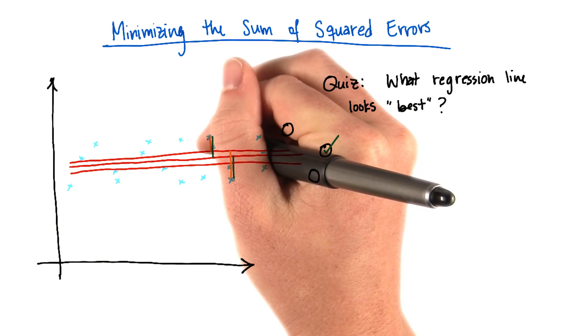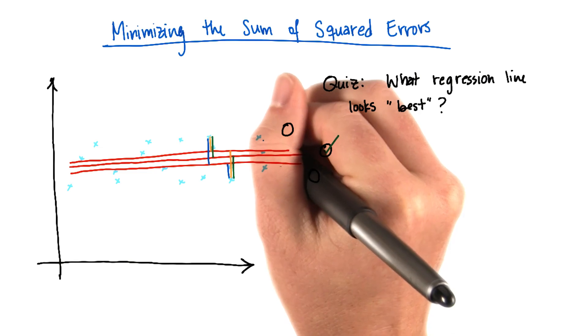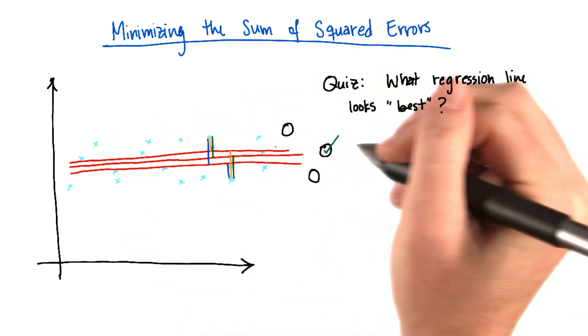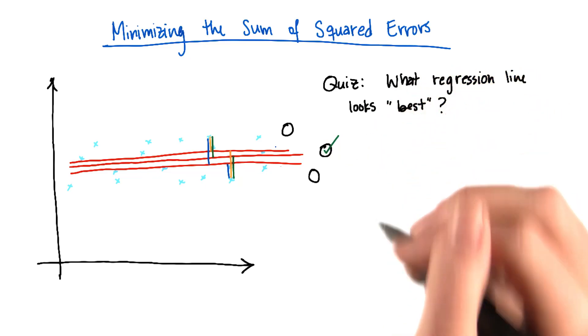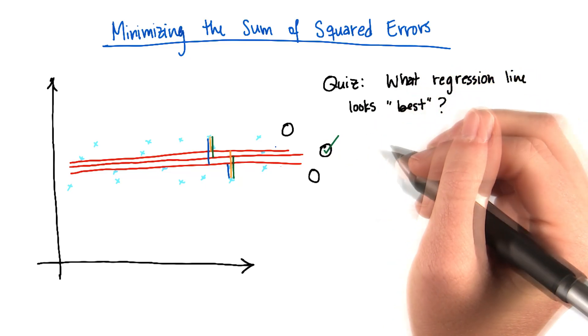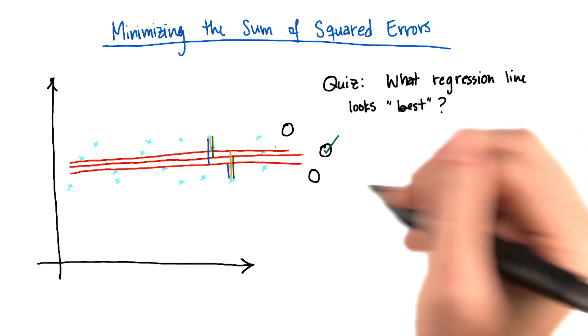And in fact, the same thing would be true for the bottom regression line as well. And if you have equal number of points above and below each of these lines, then in general that's always going to be true. There's a fundamental ambiguity when you use the absolute value of the errors in terms of exactly where the regression can fall. It could be anywhere in this range.